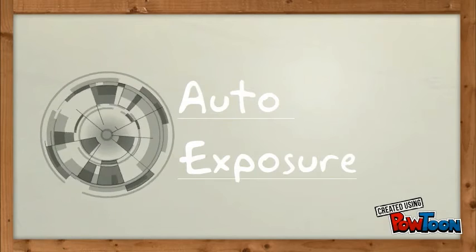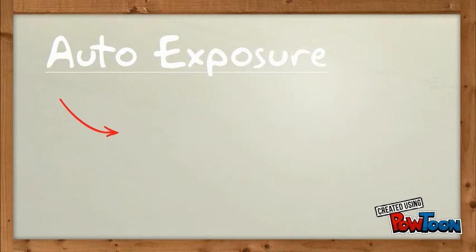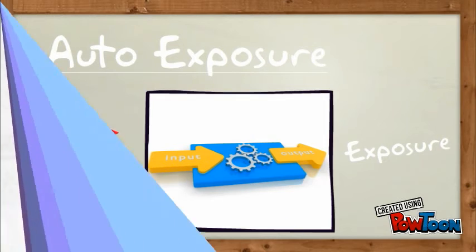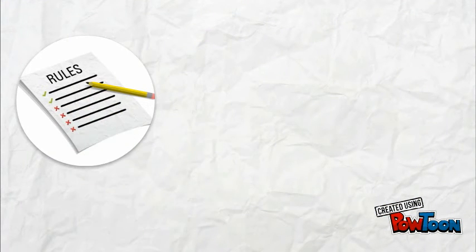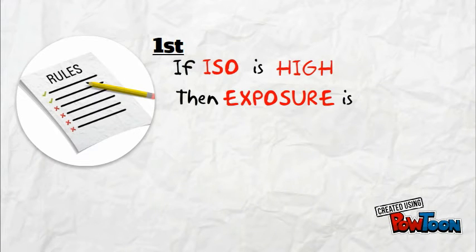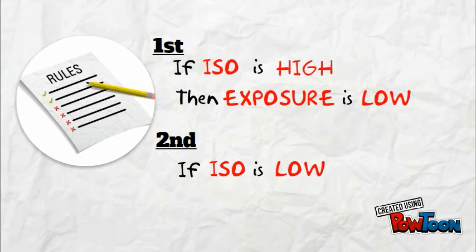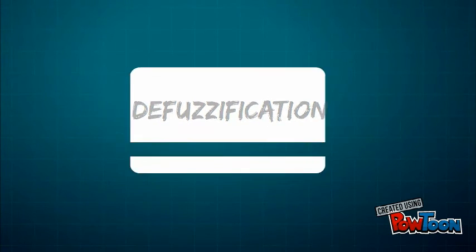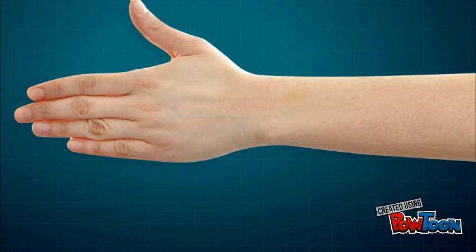Auto exposure involves ISO level as input while the output is exposure level. So the rules that apply in auto exposure technique are: if ISO level is high then the exposure level is low, while if the ISO level is low then the exposure level is high.